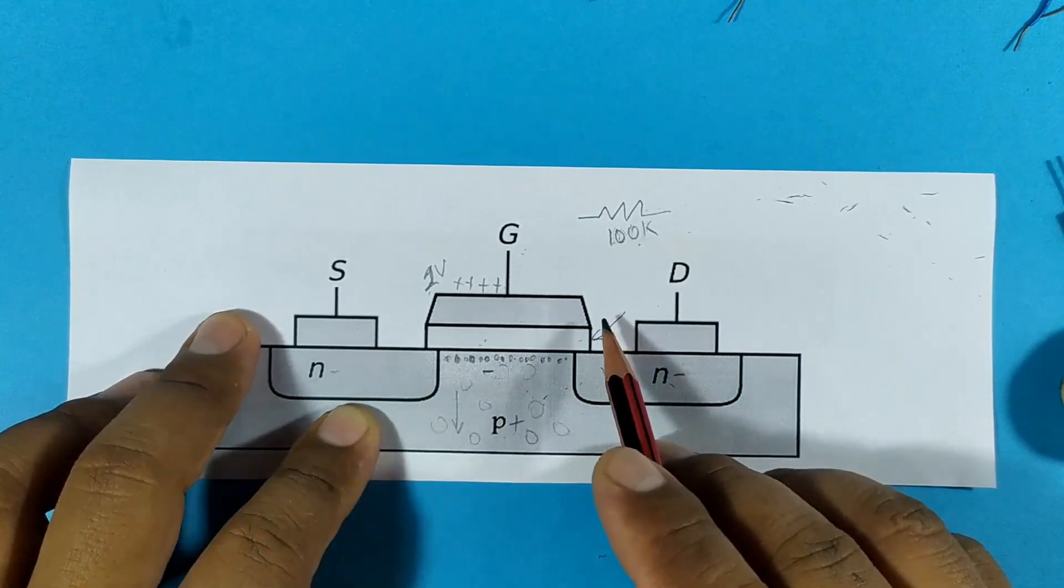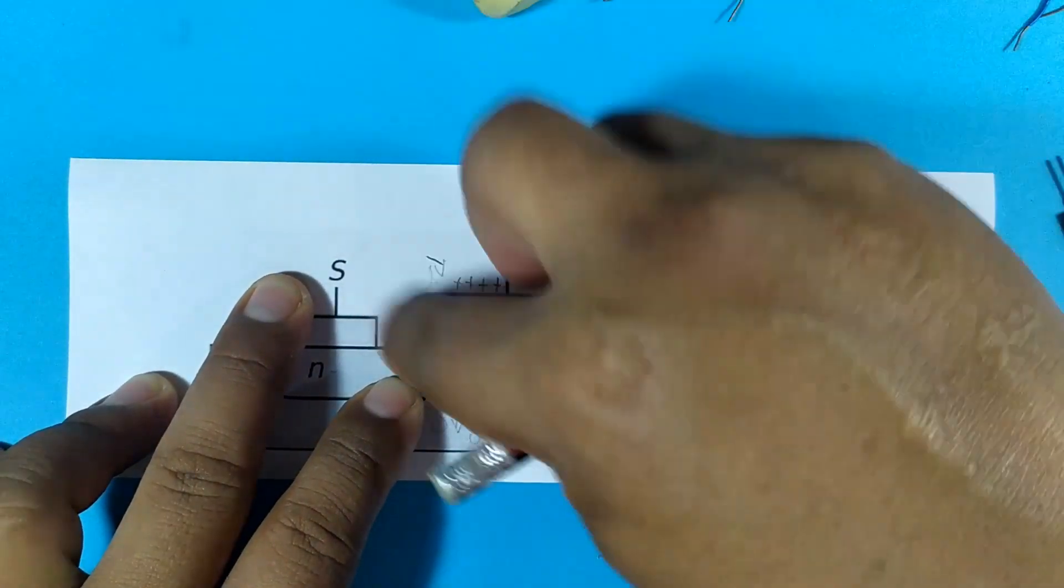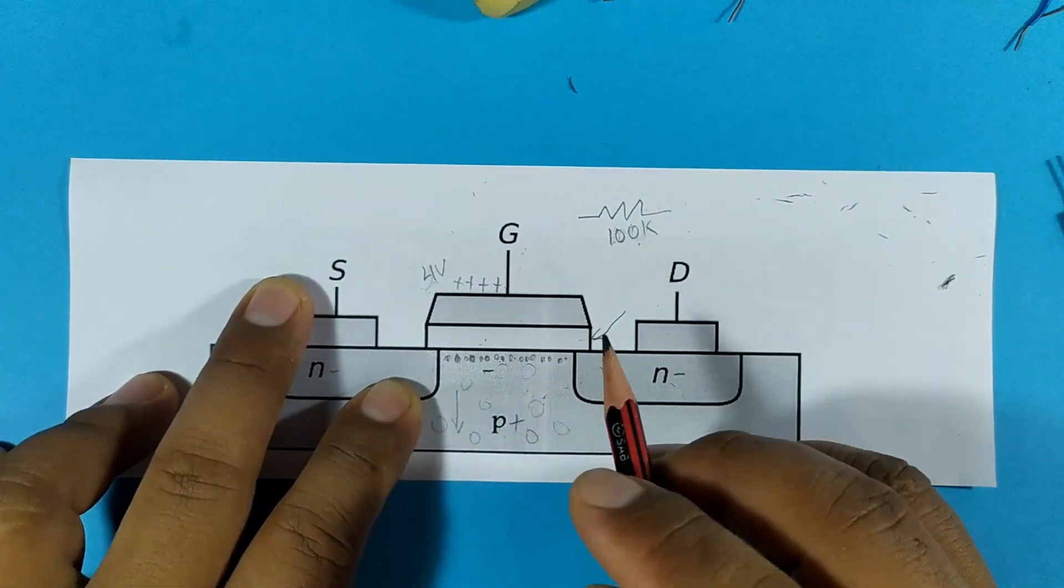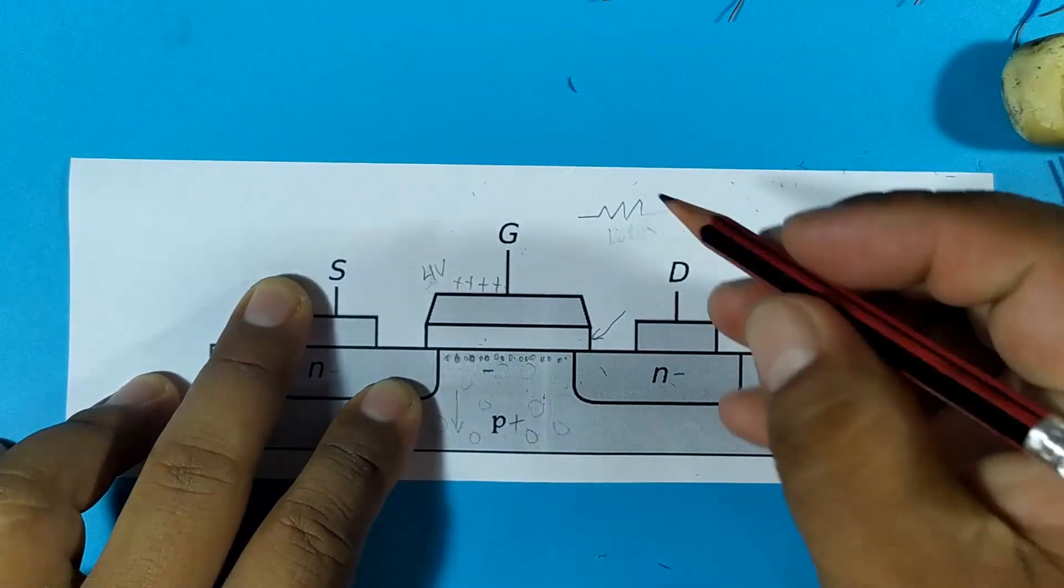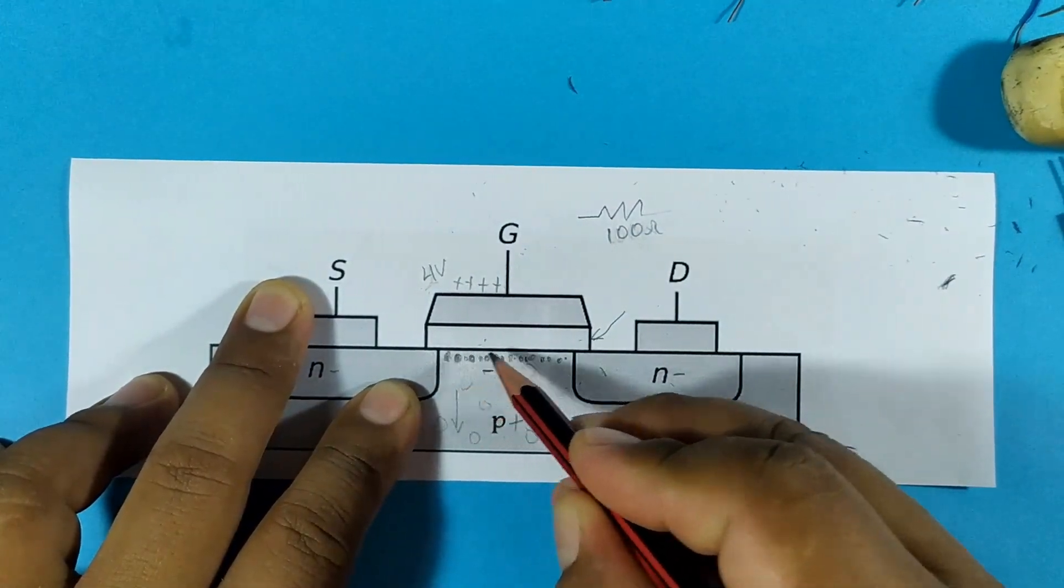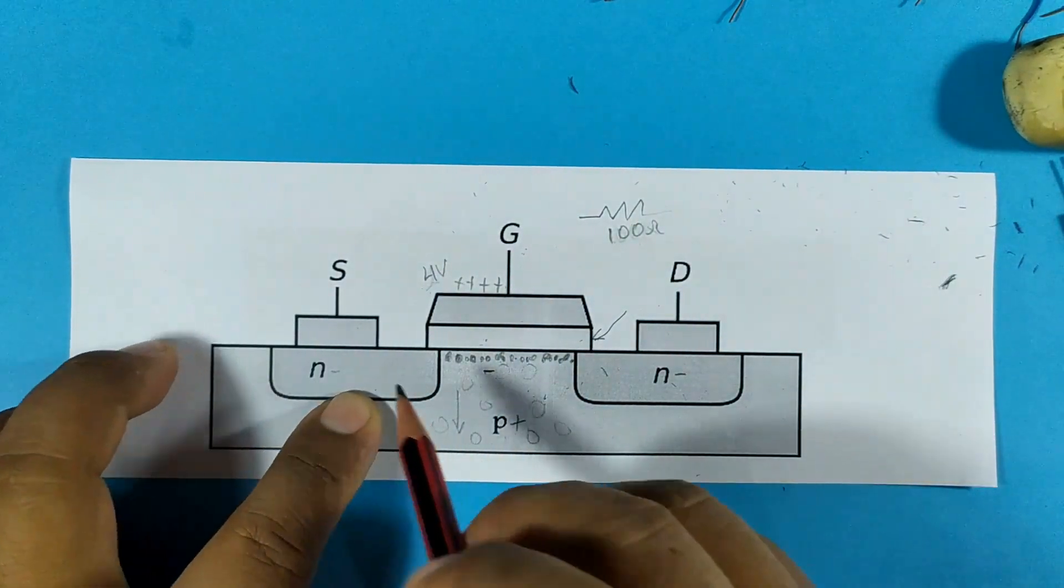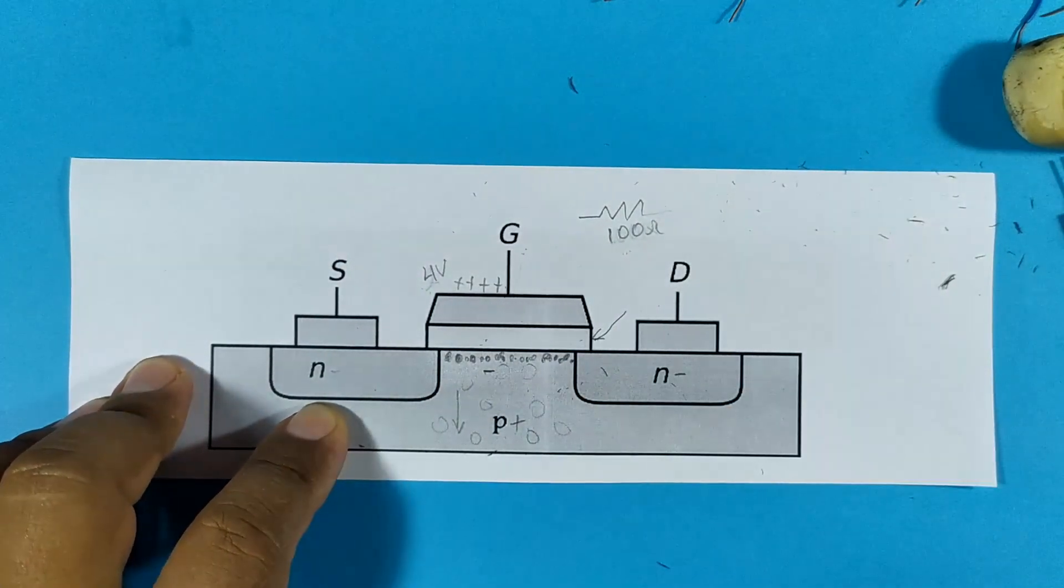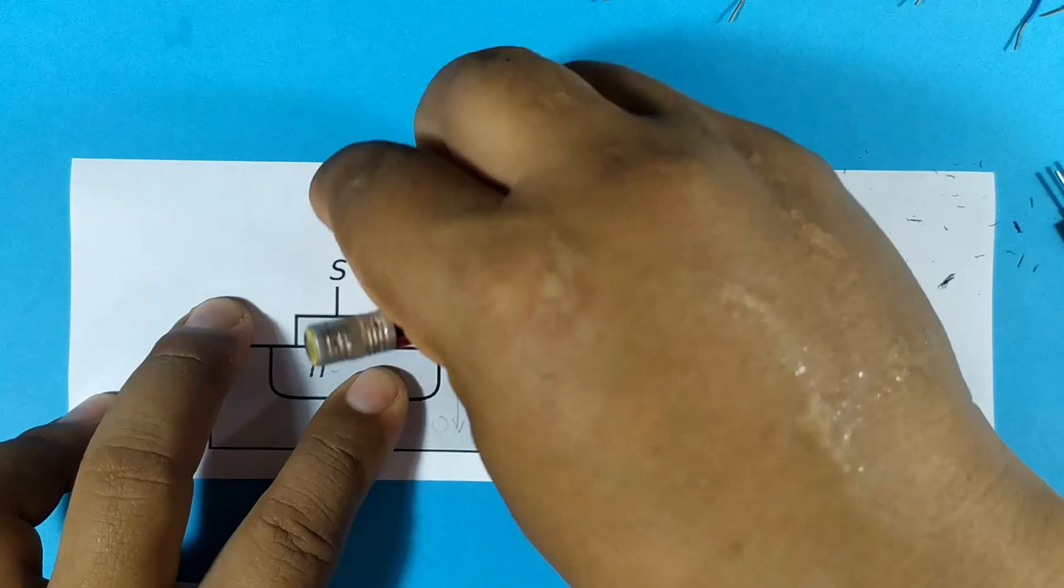MOSFET transistors ask or request that we set voltages greater than 4 volts. For example, 4 volts is what the datasheet asks for. By having that, well, this resistance could go down to 100 ohms. So the path is almost complete, it's much better than before. And therefore the current can pass from the source to the drain. Only we still have a resistance of 100 ohms. To further reduce this resistance, we will have to increase the voltage at the gate even more.